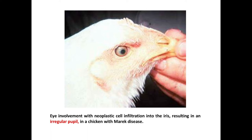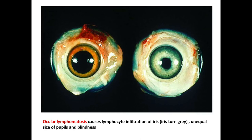There is eye involvement with neoplastic cell infiltration into the iris. Ocular lymphomatosis causes lymphocyte infiltration of the iris, causing the iris to turn grey. Unequal size of the pupil and blindness can be seen. As shown in this picture, the right eye is affected with Marek's disease and the left eye is a normal eye.